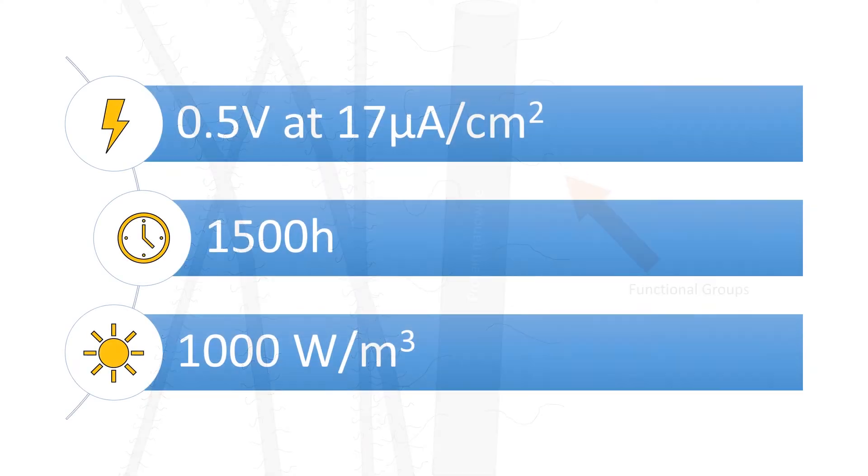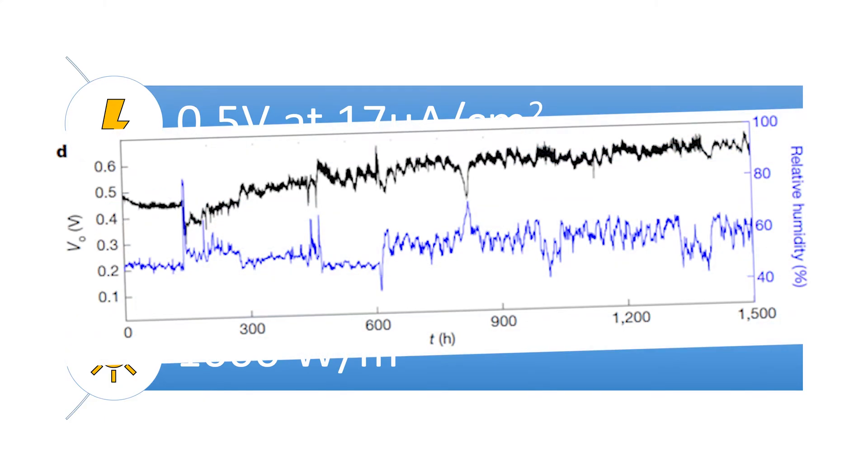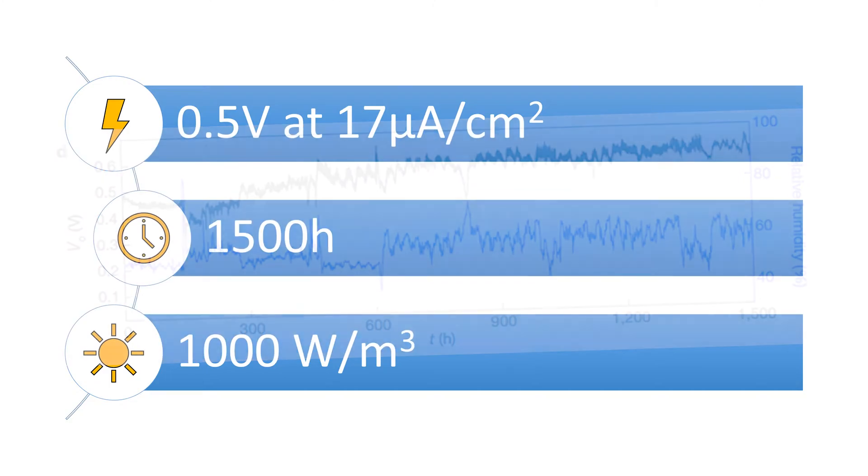The device proved capable of generating stable voltages of 0.5 volts at 17 microamps per square centimeter. Not only that, they had it running for 1500 hours, two months, and it consistently provided energy throughout this period.